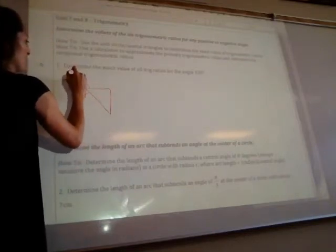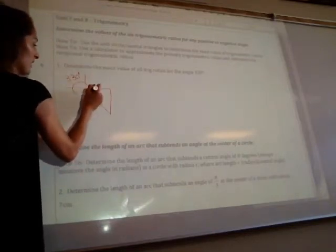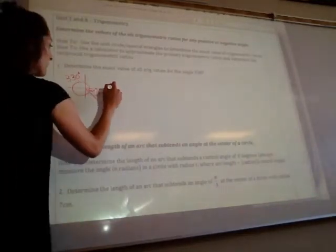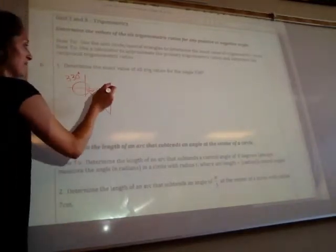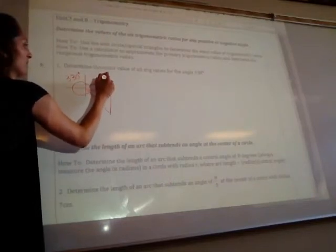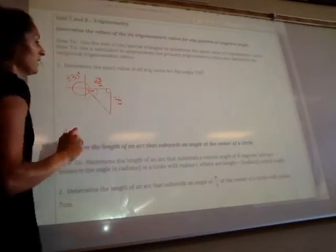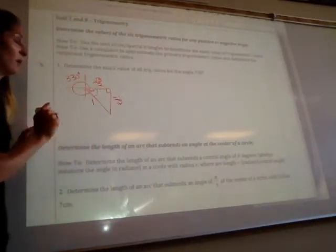Okay, this is 330 degrees. The special triangle, which is our reference angle, will be a 30 degree triangle. On the x-axis we're going to have root 3 over 2, and on the y-axis we're going to have negative 1 over 2. In a unit circle your hypotenuse will always be 1.